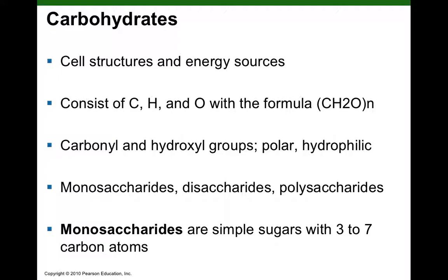There are three basic classes: monosaccharides (mono = one sugar) — examples include glucose, ribose, and deoxyribose. Then disaccharides, where two monosaccharides are linked together, forming a glycosidic bond through dehydration synthesis — we'll talk about lactose (milk sugar) and sucrose (table sugar). Finally, polysaccharides are many monosaccharide subunits linked together in long chains. We'll discuss cellulose, glycogen, and plant starch — amylose and amylopectin.